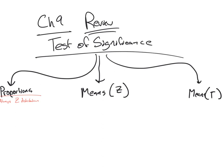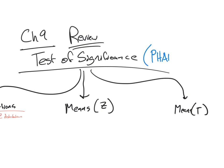Let me come back up to test of significance. Remember, we used a thing called PHANTOMS — that was our acronym. The most important parts of PHANTOMS are the hypotheses, the assumption checks, the test calculations, obtaining a p-value, making a decision, and the summary. The p part is important to articulate — what is it truly that I'm looking for? I'm looking for the true population proportion, or the true population mean.